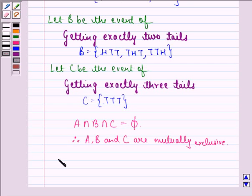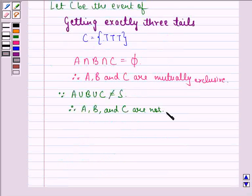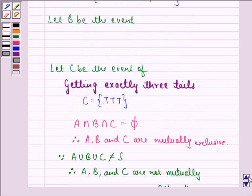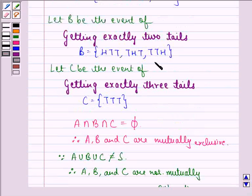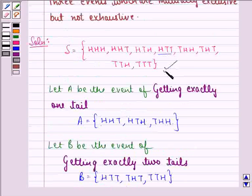Now we also see that since A union B union C is not equal to the sample space, therefore A, B and C are not mutually exhaustive because they would have been mutually exhaustive if their union would have been equal to the sample space.